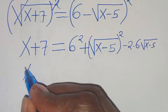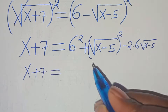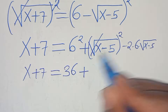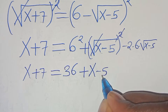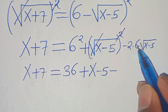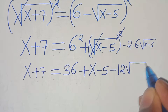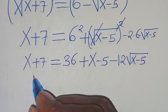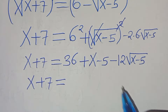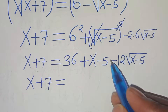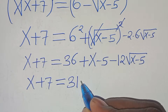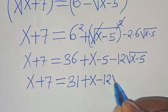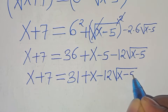This gives x plus 7 equals 36 plus (x minus 5) minus 12 times the square root of x minus 5, which simplifies to x plus 7 equals 31 plus x minus 12 times the square root of x minus 5.